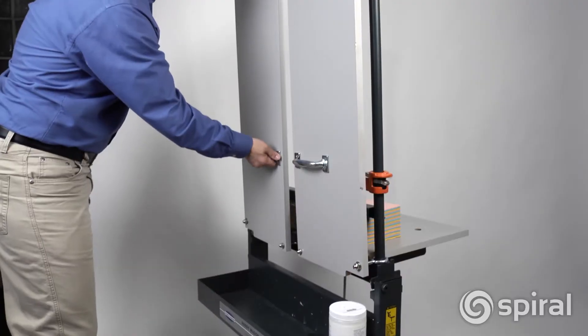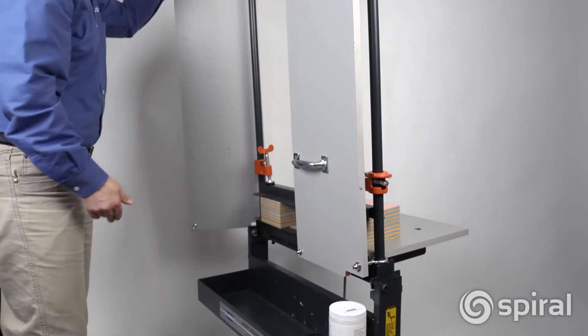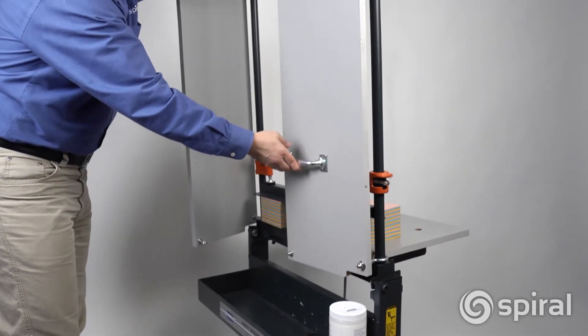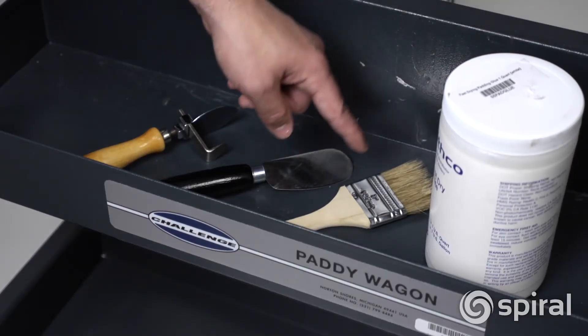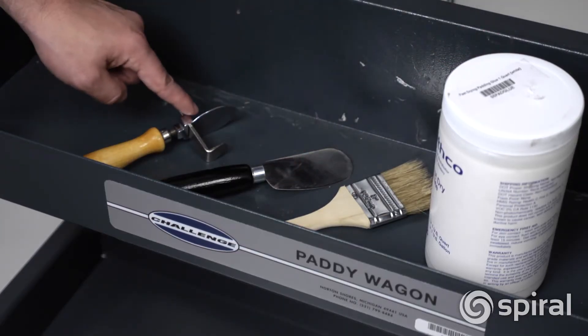Tilt the Paddy Wagon back to the upright position. Lift the doors to unlock and swing them open for complete access to your padding surface. It has integrated shelves to store all your padding supplies, and they double as a spill apron to catch any excess padding compound.